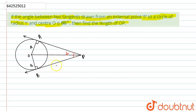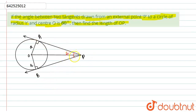Let this be the circle with center O. This is the point P, from which two tangents have been drawn onto the circle at points A and B respectively. The angle between these two tangents, that is angle APB, is 60 degrees.